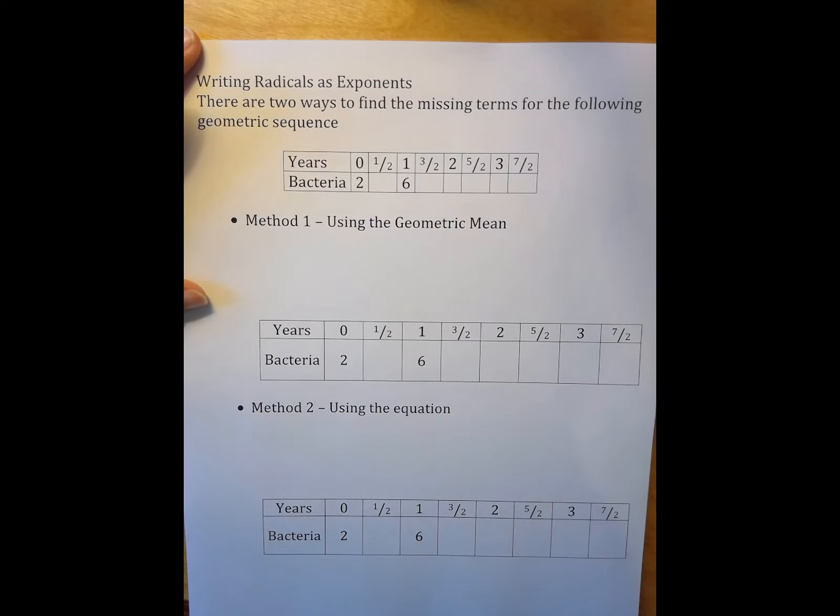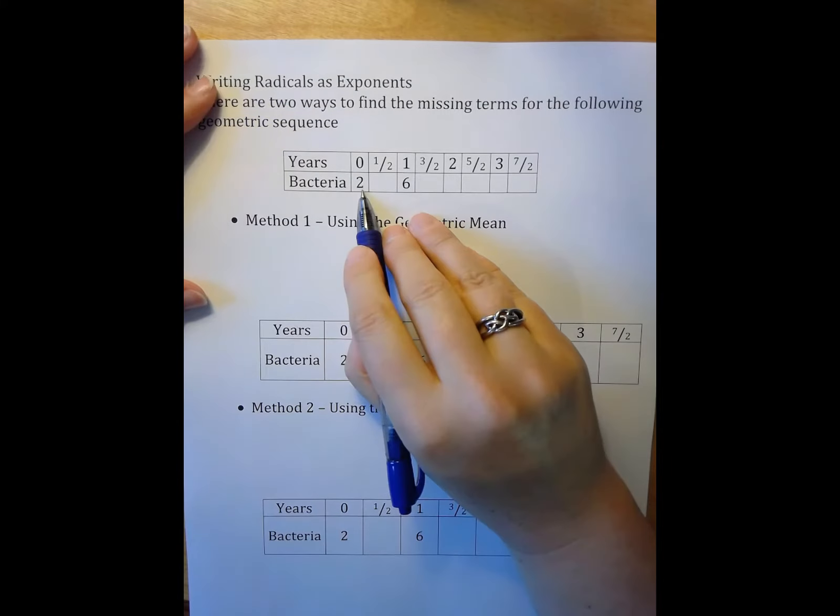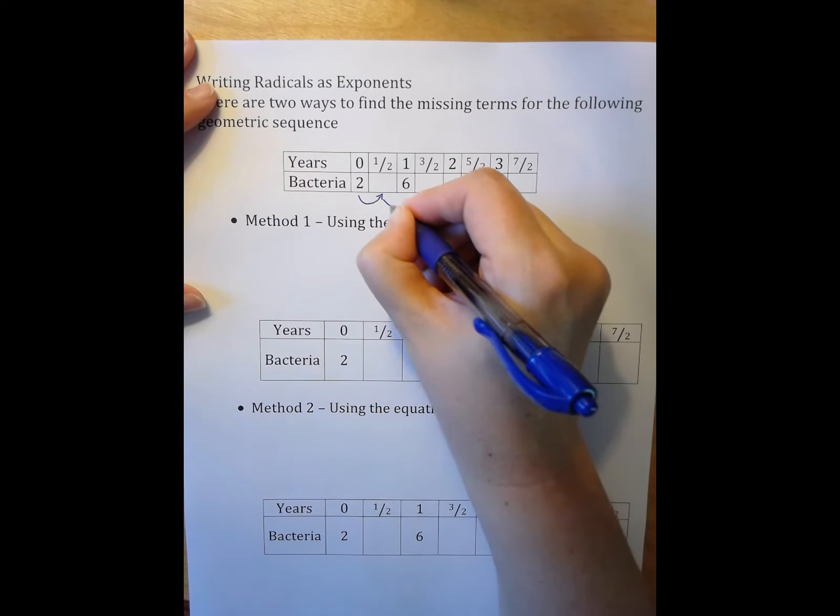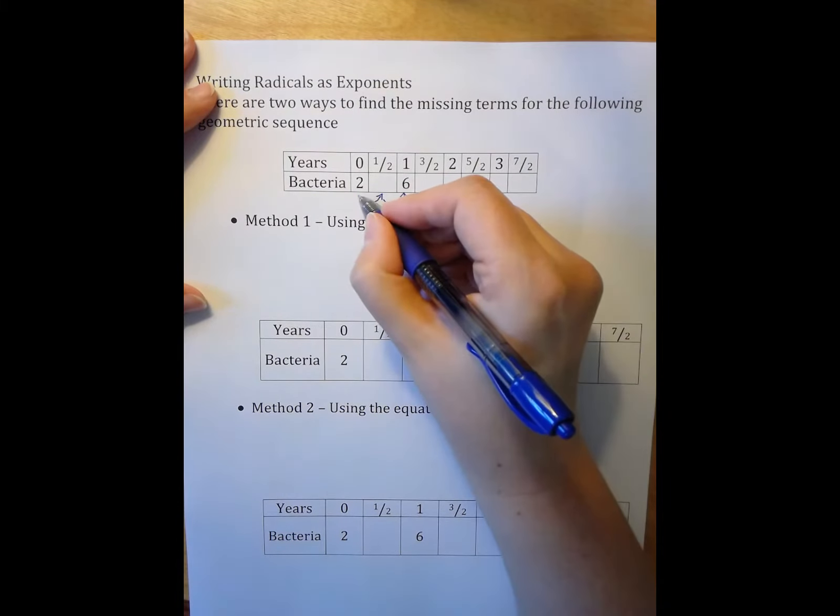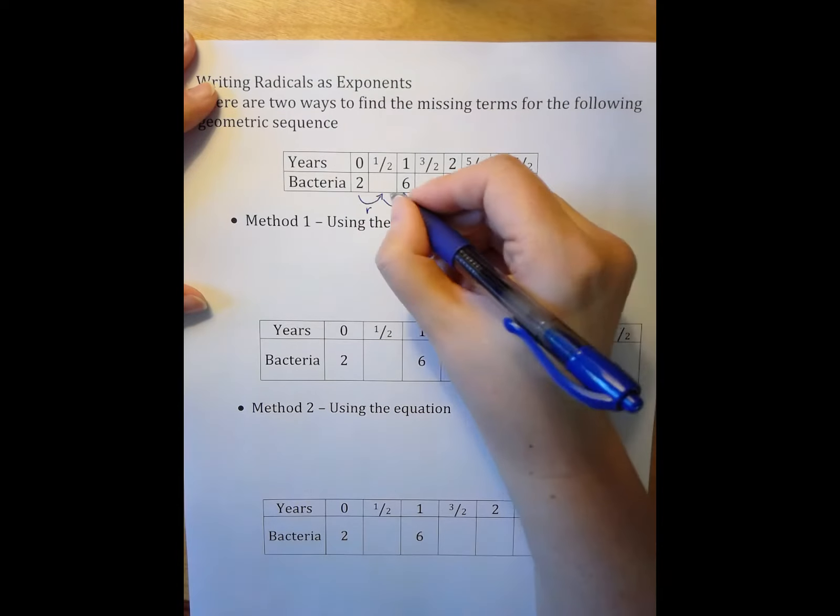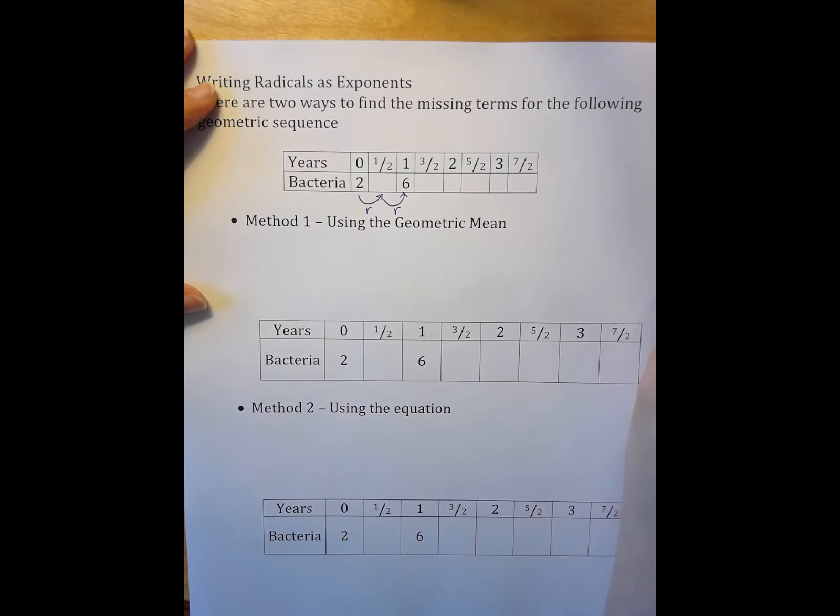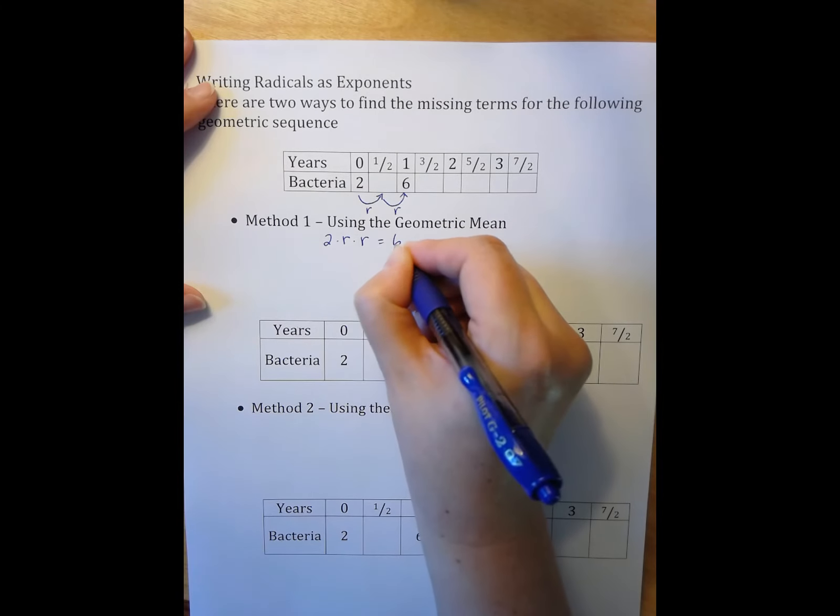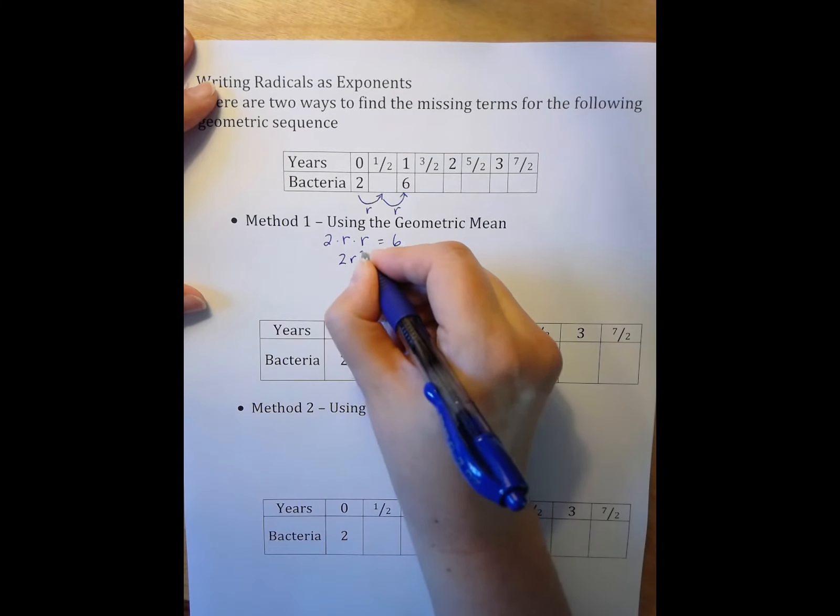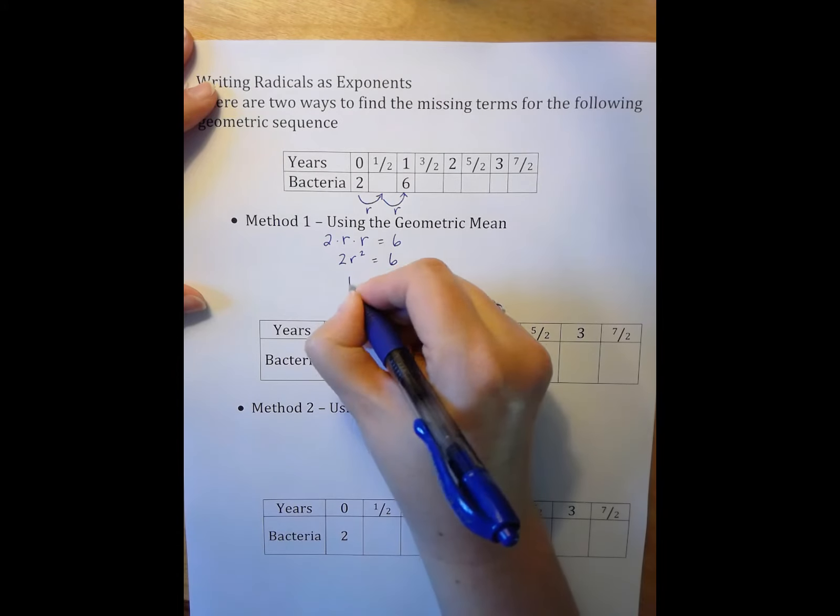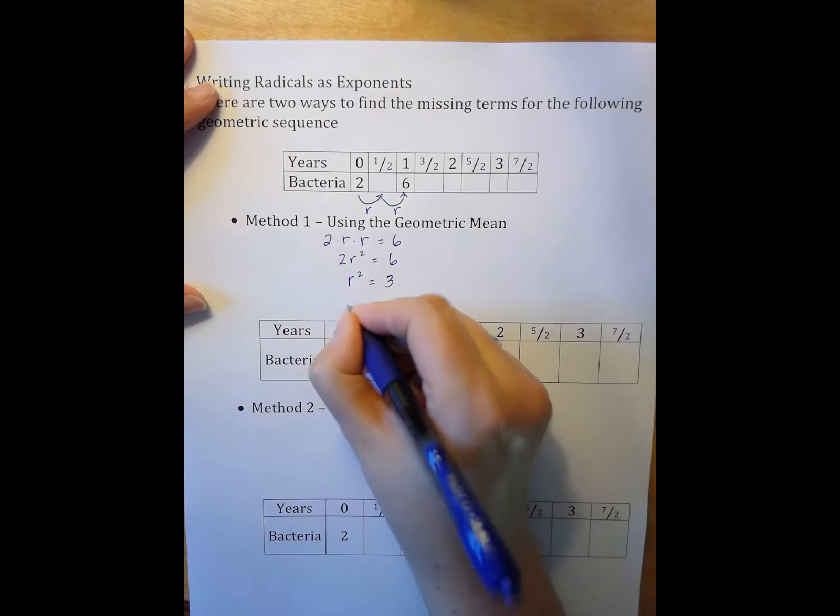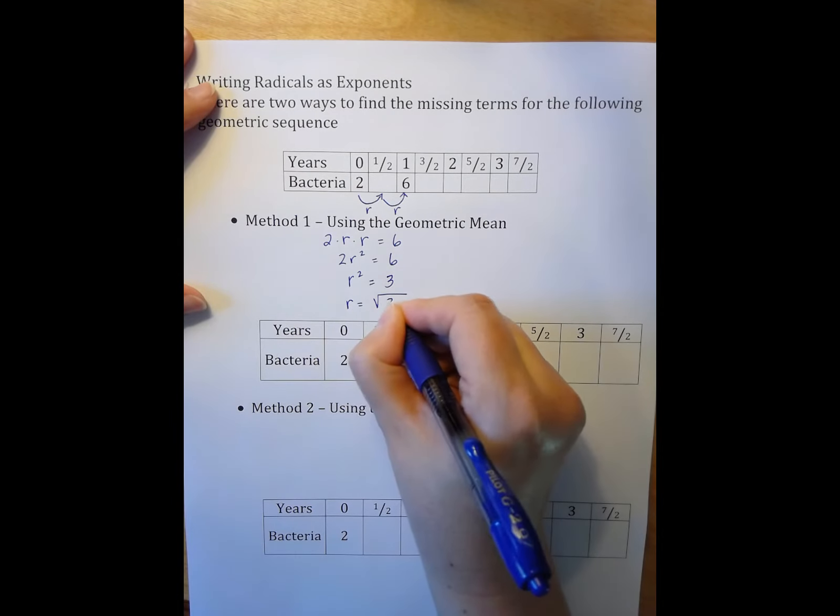What I'm looking at here is going from 2 to 6. When I go from 2 to 6, I have to take two jumps. So I have to multiply 2 by something, we'll call it r, and then multiply that number by r again to get 6. Which means I have 2 times r times r equals 6. That's 2r² equals 6, r² equals 3, which means r equals the square root of 3.